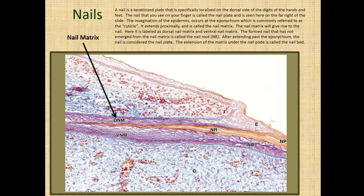The cuticle wraps around and overlaps a little bit of the nail plate. The anatomic name for that is the eponychium. These are just some anatomic terms that help you get oriented to the histology presentation of the nail.